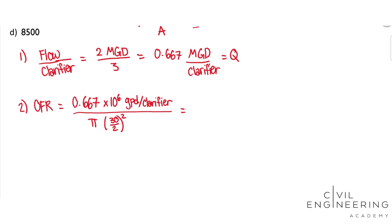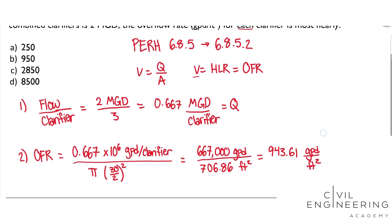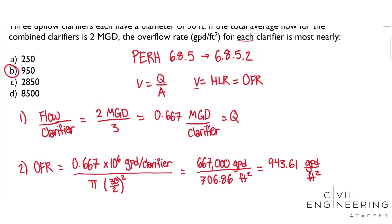So I'm just going to move the decimal over a couple places, so that's 667,000 GPD over 706.86 feet squared, and that will give us 943.61 gallons per day per feet squared, and that looks most nearly like B, so B is our answer.